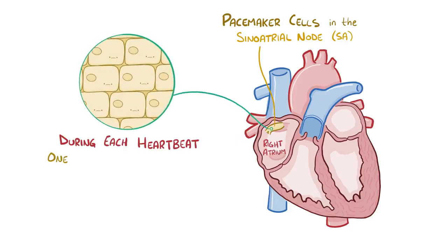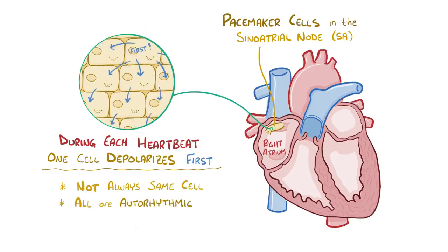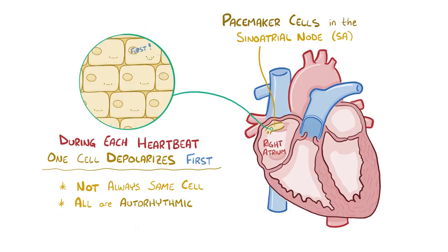During each heartbeat, one pacemaker cell out of the group will automatically depolarize first. Each heartbeat might be led by a different cell in the group, but eventually at least one of them will fire because they're all auto-rhythmic — meaning every pacemaker cell has the ability to self-generate a new action potential given enough time. As a group, the pacemaker cells of the SA node act like a drill sergeant, deciding when the heart contracts and relaxes, and setting the heart rate.